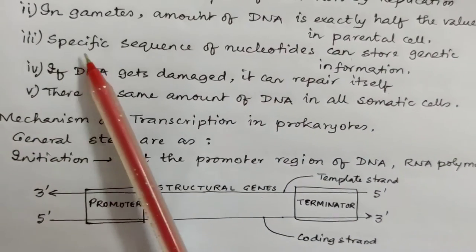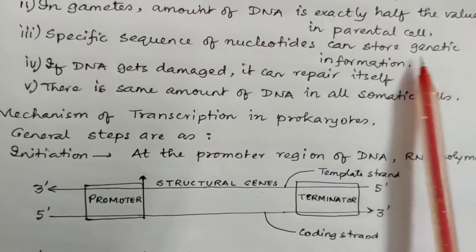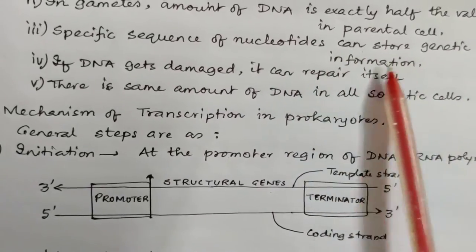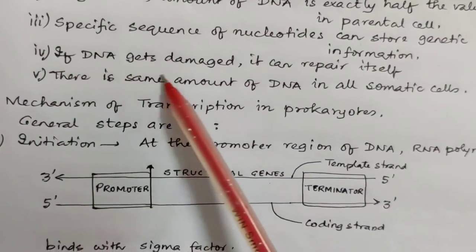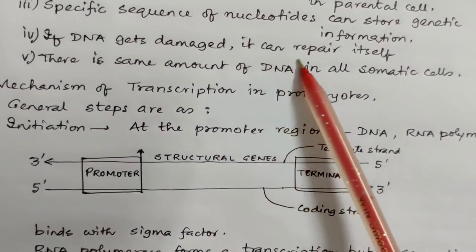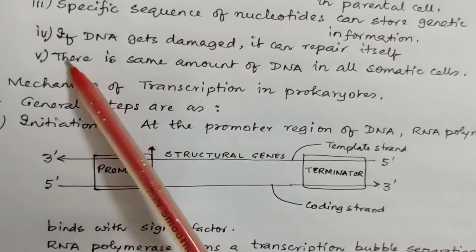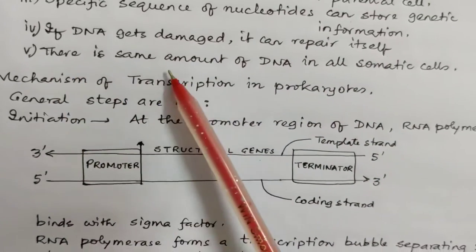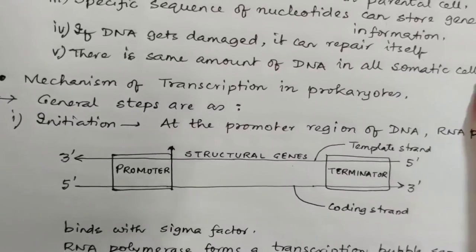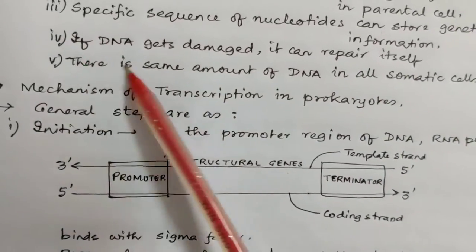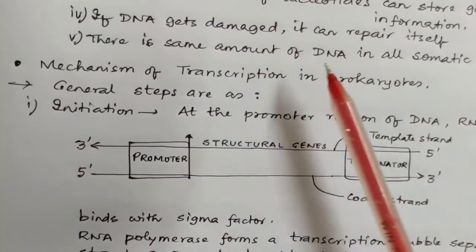Number three is specific sequence of nucleotides can store genetic information. Number four is if DNA gets damaged it can repair itself. And number five is there is the same amount of DNA in all somatic cells. So these all are the proof for DNA to be a genetic material.